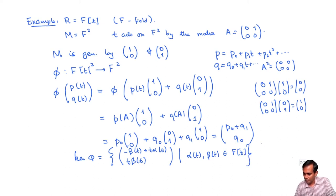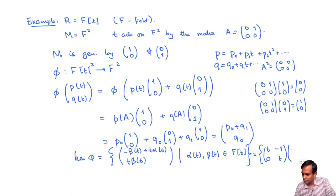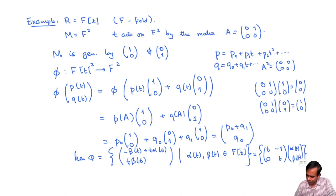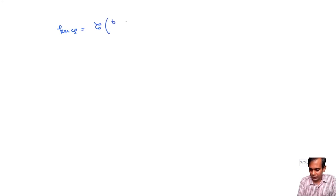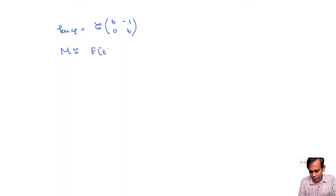So the kernel of phi is the column space of the matrix [[T, -1],[0, T]]. Therefore M is isomorphic to F[T]^2 modulo the column space of [[T, -1],[0, T]]. One thing you notice is that this matrix can be written as T times the identity matrix minus the original matrix A = [[0,1],[0,0]].